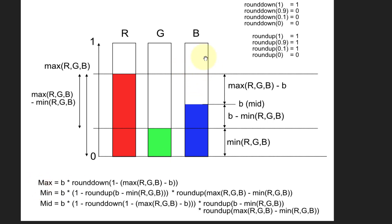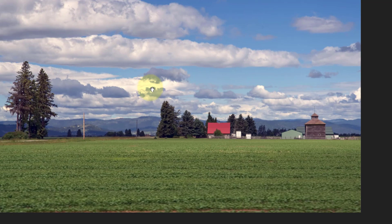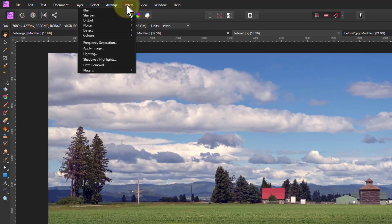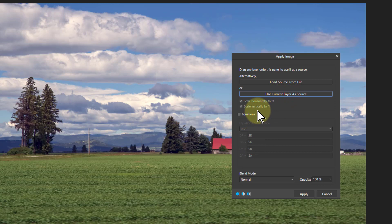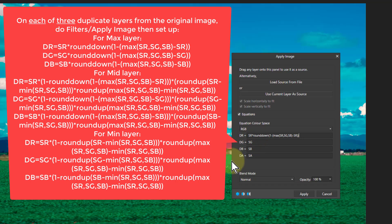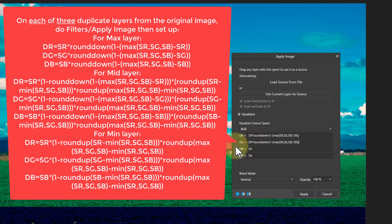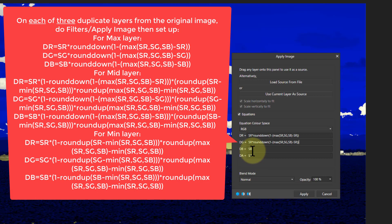So what you end up then with is a calculation for the three areas. And then I can take this here, go to filters, apply image. And if I go to equations and put in here, I'll just do a cut and paste. For this one here, for the red, because we're now doing the maximum layer.